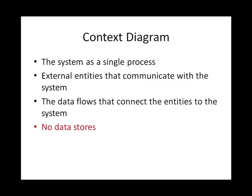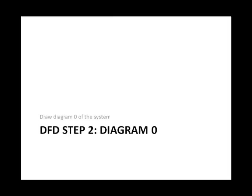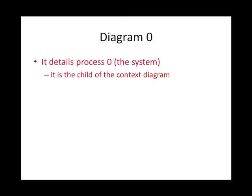Another rule you probably already noticed: there are no data stores in a context diagram. The reason is it's a very high-level diagram — no details. I don't care what I save at this point. The data stores would come in the next diagram, which is Diagram Zero. Diagram Zero is a diagram that takes the context diagram and details it — it expands the system, which is process zero, into many other processes. It's a very important diagram because it really represents the high-level functionality and processes of your system. It's a child of the context diagram, meaning you build it based on the context diagram.